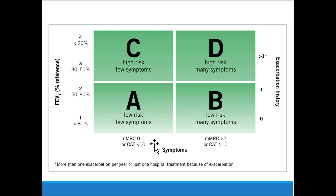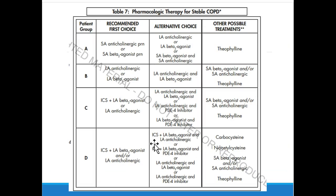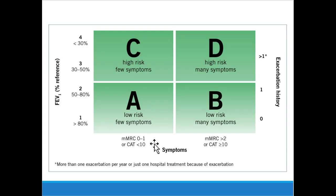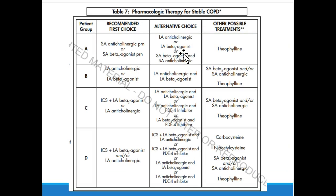As patients are stratified by severity — poor pulmonary function and more exacerbation history puts them in higher groups with more aggressive treatment. Category D involves triple therapy: inhaled corticosteroid, long-acting beta agonist, and anticholinergic. Ultimately, severe uncontrolled asthma and severe COPD end up using the same medications — it's just the initial treatment order that differs.